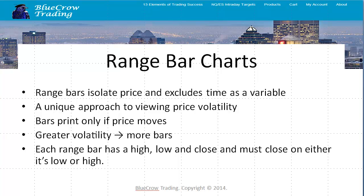If you're working with a one-minute chart, every one minute there will be an additional candlestick created, but embedded within that one-minute time frame will also be price movement. So traditionally, we are accustomed to seeing price and time combined. Yet what range bar charts do is they isolate price movement alone and exclude time entirely. I found this exceptionally useful to look at the two variables independent of each other, and the story that it tells is quite different if you compare it to time-based charts. I found this as a unique approach to viewing price volatility, because price is what I'm focused on in trading.